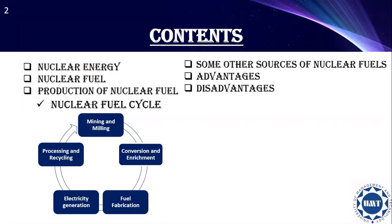In this presentation, I'll discuss what nuclear energy is and for which nuclear fuel is specifically used. Then I'll discuss the production of nuclear fuel, covering the nuclear fuel cycle and its main processes: mining and milling, conversion and enrichment, fuel fabrication, electricity generation, and processing and recycling of nuclear fuel. Then I'll discuss other sources of nuclear fuels, their advantages, and their disadvantages.